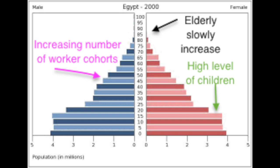We also have to remember that if we take this graph and start extending it year by year, all those bars continue to go up. So you're going to start seeing more and more people live to an older age as the country progresses.